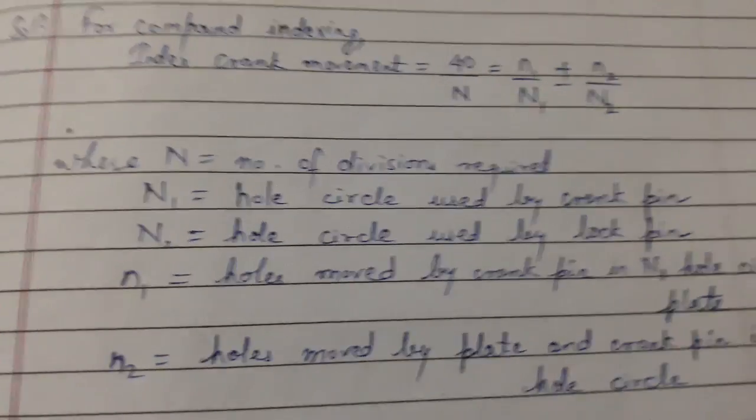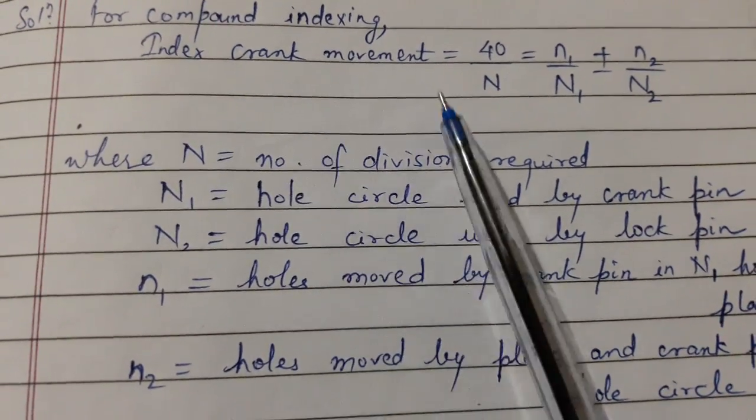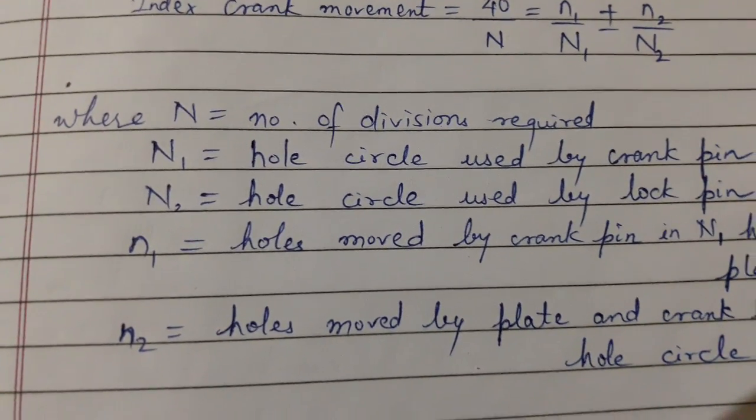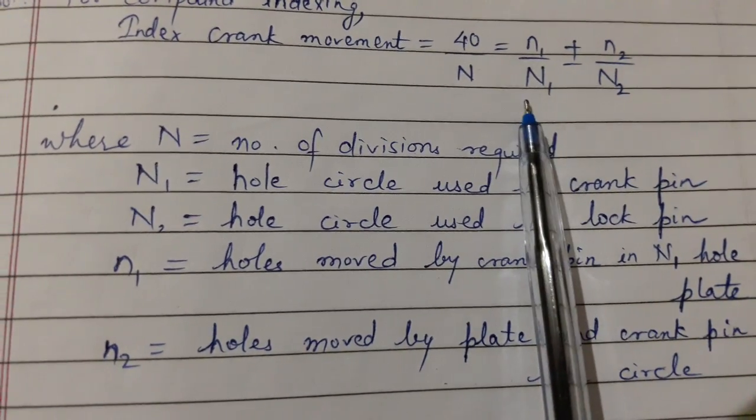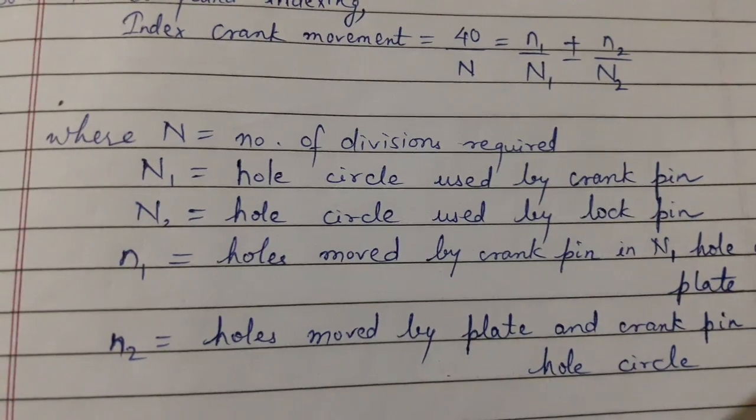For compound indexing, the starting point is index crank movement which is 40 divided by capital N, where capital N is the number of divisions which are required, which is equal to small n1 upon capital N1 plus minus small n2 upon capital N2.